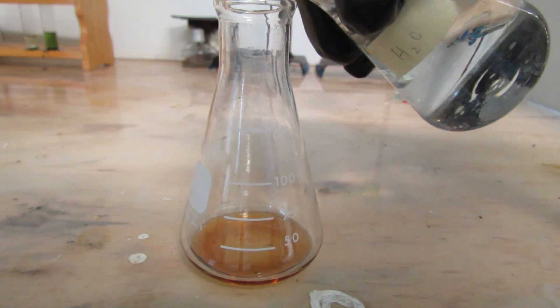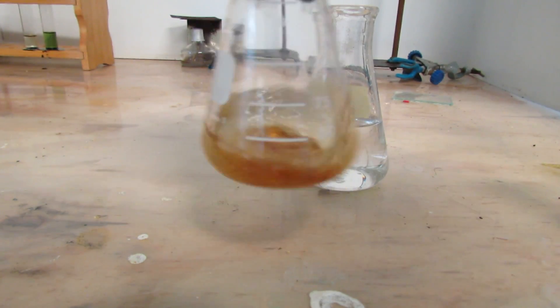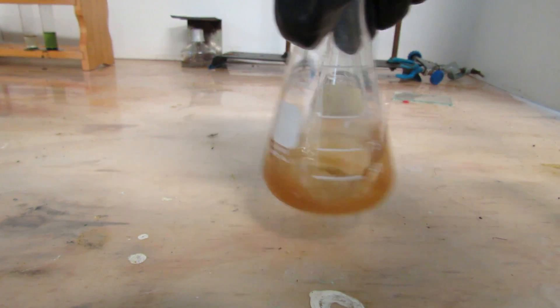First, add about 50 milliliters of distilled water to the 5 milliliters of syrup. Swirl the flask to ensure thorough mixing of the two ingredients.